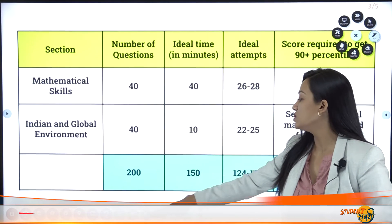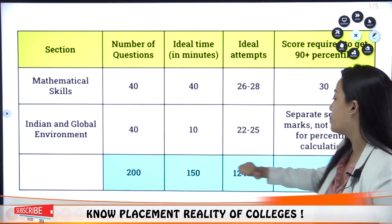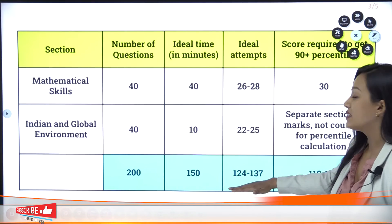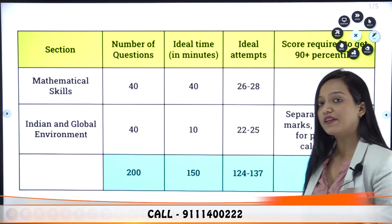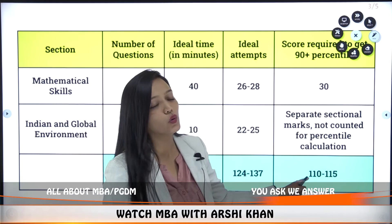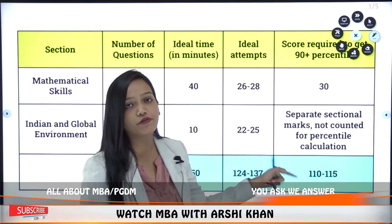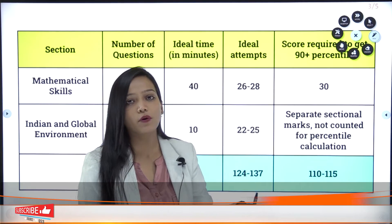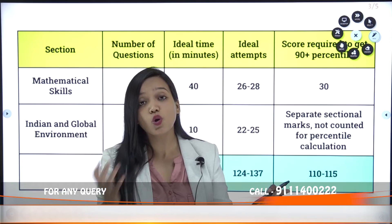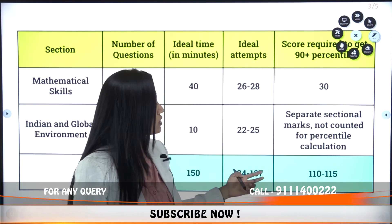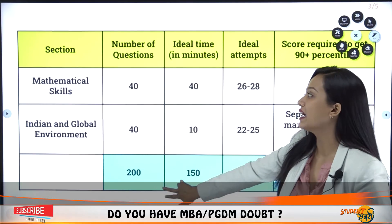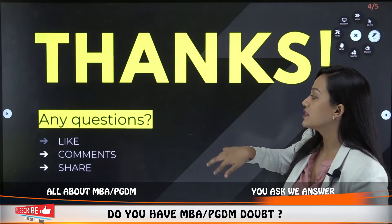Overall, there are 200 questions and 150 minutes total time. The ideal attempts should be 124 to 137 questions, and ideal marks should be around 110 to 150. This is what you need to achieve 90 plus percentile in MAT.